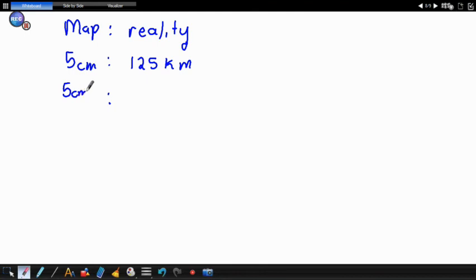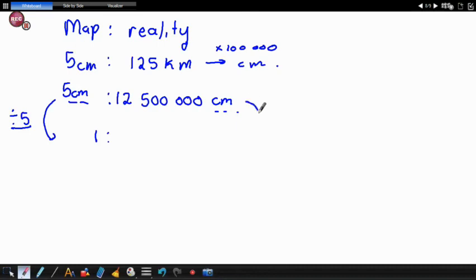So the first thing that we need to do is convert the reality measurement into centimeters. So I'll have five centimeters here, but this one now I converted to centimeters. That means I'd have to multiply by 100,000. So if I multiply by 100,000, I have 12,500,000 centimeters. Now I'm sorted because on my left hand side, I have centimeters, my right hand side, I have centimeters. Now what do I need to do? I'm going to divide by five because I want a one here. So I want one is to something. And when I do this side, I'd have to do this side, divide by five as well. And if I divide by five centimeters on both sides, then I will get one is to 2,500,000. And that's our answer.